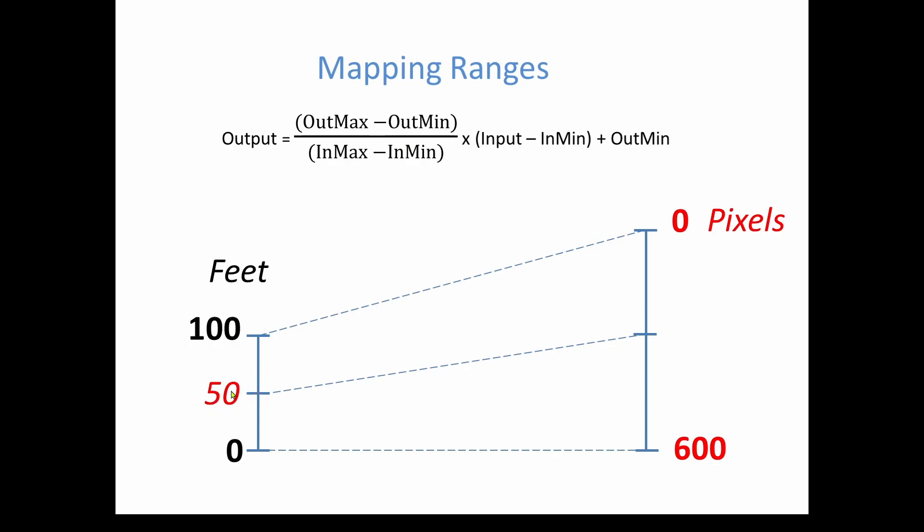And then you multiply it times the input minus the input minimum. And the input is, in this case, we want to solve for 50 feet. Where would that be in our pixel range? So you take the input minus the minimum of the input and add that to the minimum of the output. And that should give you the answer. So if we look at this, we know it goes from 0 to 100. We want to map 50. And this goes from 0 to 600. So we should get, by inspection, like 300, right? So let's fill this out and see what we get.